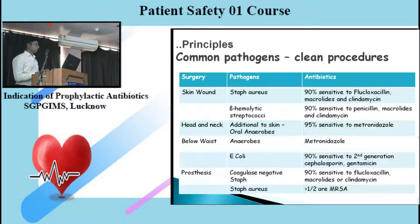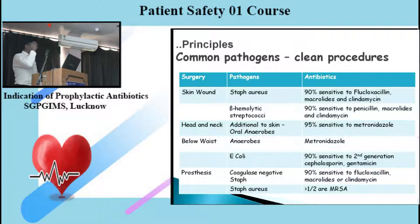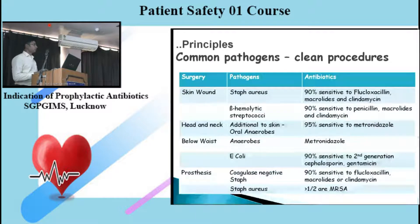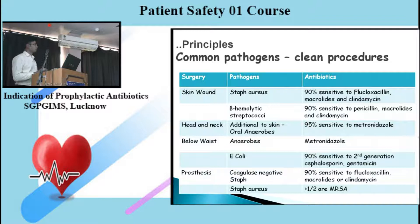These are the common pathogens we encounter with skin wounds: most commonly Staph aureus or beta-hemolytic streptococci, which are mostly sensitive to penicillins, macrolides, and clindamycin. In head and neck surgery, in addition to those, there can be oral anaerobes — 95% of which are sensitive to metronidazole. In below-waist surgeries like the perineum or perianal region, there can be additional contamination with anaerobes and E. coli.